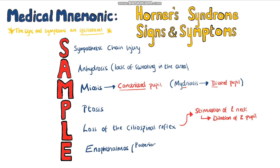Finally, we have E for enophthalmos, which is a posterior displacement of the eyeball — basically, it sinks back further into the head. However, studies have shown that this isn't actually present in human Horner's syndrome. It's just an illusion due to the ptosis.